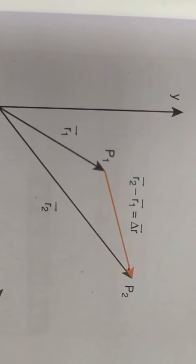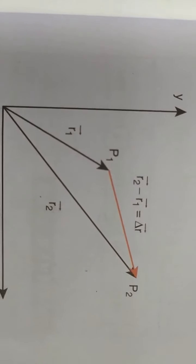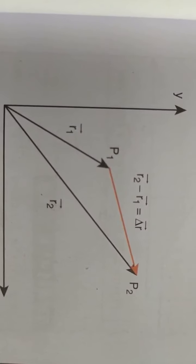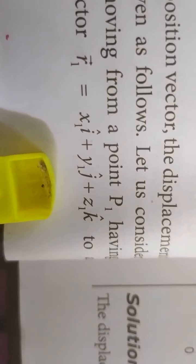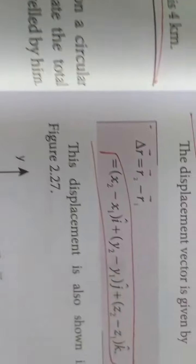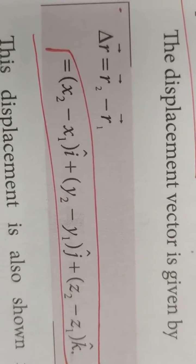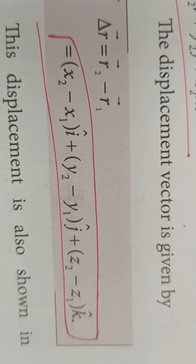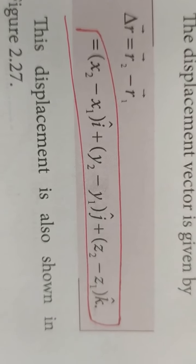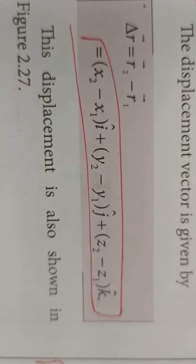Next, the displacement vector. Initially a particle is at position P1 and after some time it reaches P2. Draw r1 vector and r2 vector from the origin. r1 vector equals x1 i-cap plus y1 j-cap plus z1 k-cap, and r2 vector equals x2 i-cap plus y2 j-cap plus z2 k-cap. The displacement vector is given by the formula: Δr vector = r2 vector minus r1 vector, which equals (x2−x1) i-cap plus (y2−y1) j-cap plus (z2−z1) k-cap. This is a very important formula.